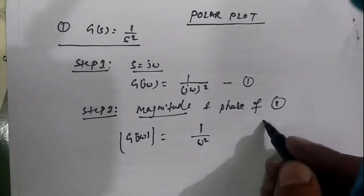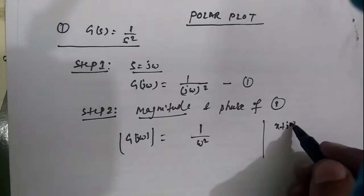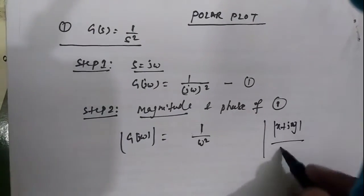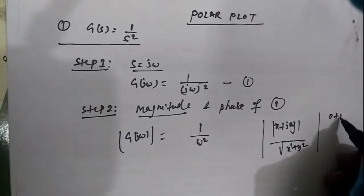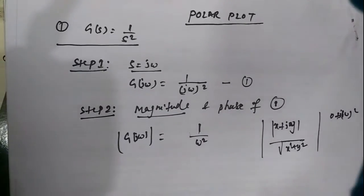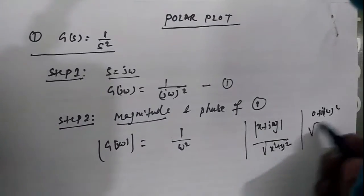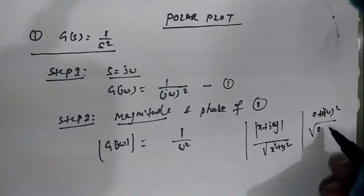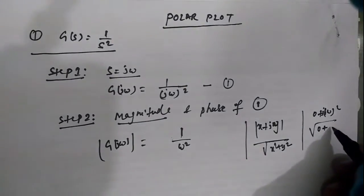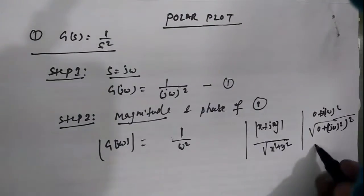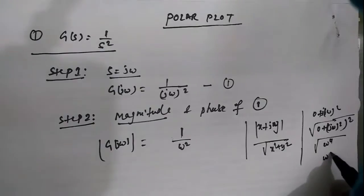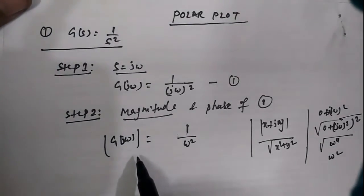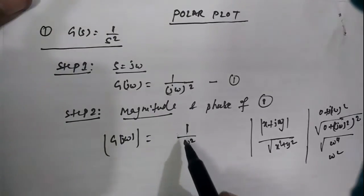To understand why: if we have x + jy, the magnitude is √(x² + y²). Similarly, for 0 + j·ω², we take √(0² + (ω²)²) = √(ω⁴) = ω². So the magnitude of G(jω) = 1/(jω)² equals 1/ω². This is equation number 2.